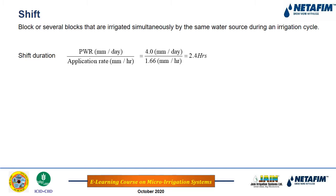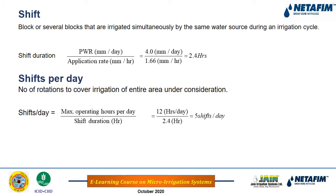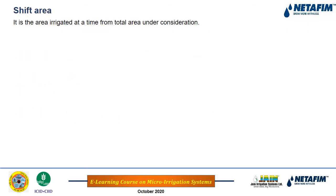Shift duration is the time of irrigation, calculated as peak water requirement divided by application rate. For example, if the crop water requirement is 4 mm/day and the application rate is 1.66 mm/hr, the shift duration is 2.4 hours. Shifts per day is calculated as maximum operating hours per day divided by shift duration. With 12 operating hours and 2.4-hour shifts, a maximum of 5 shifts per day can be achieved.